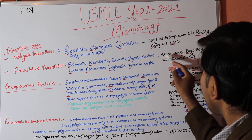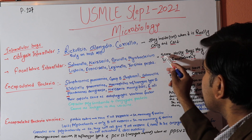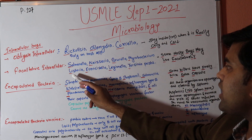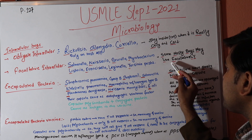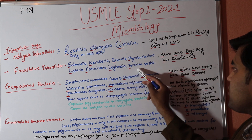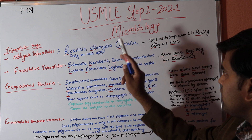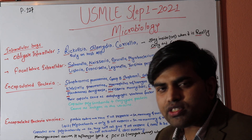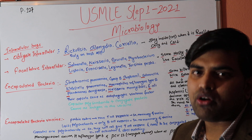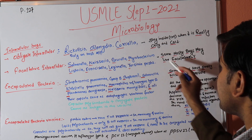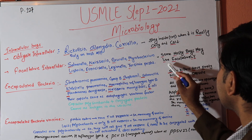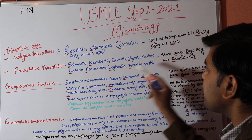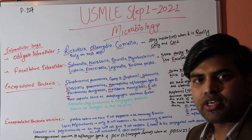To remember the facultative intracellular organisms, there is a formula: 'Some Nasty Bugs May Live Facultatively.' S = Salmonella, N = Neisseria, B = Brucella, M = Mycobacterium tuberculosis, L = Listeria, F = Francisella, L = Legionella, Y = Yersinia pestis. Remember this formula because it is very important — without it, it is difficult to remember all these organisms.